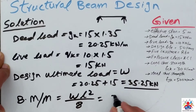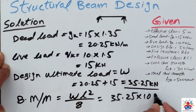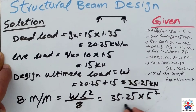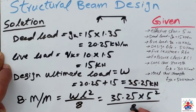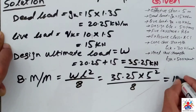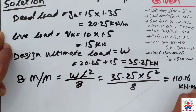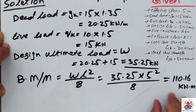So we have 35.25 multiplied by 10 to the power 6 to convert kilonewton-meters to Newton-millimeters, multiplied by L squared, which is 5 meters squared, divided by 8. The answer we get is 110.16 kilonewton-meters. So our bending moment is 110.16 kilonewton-meters.